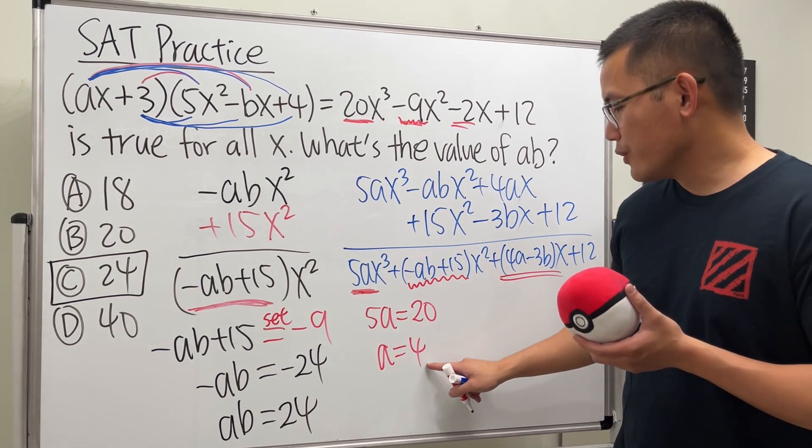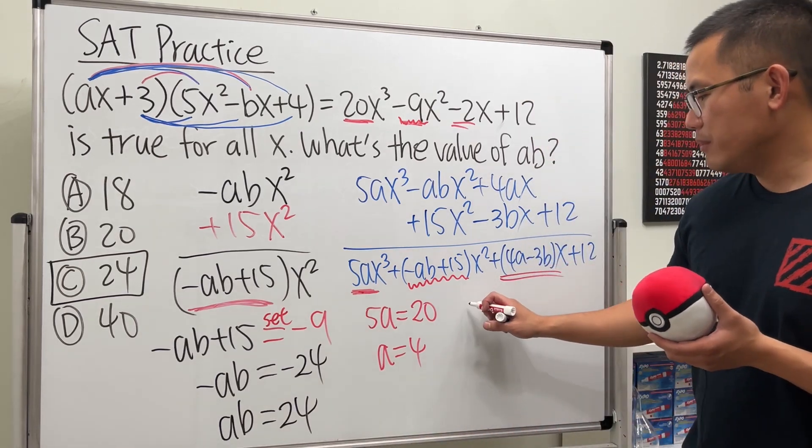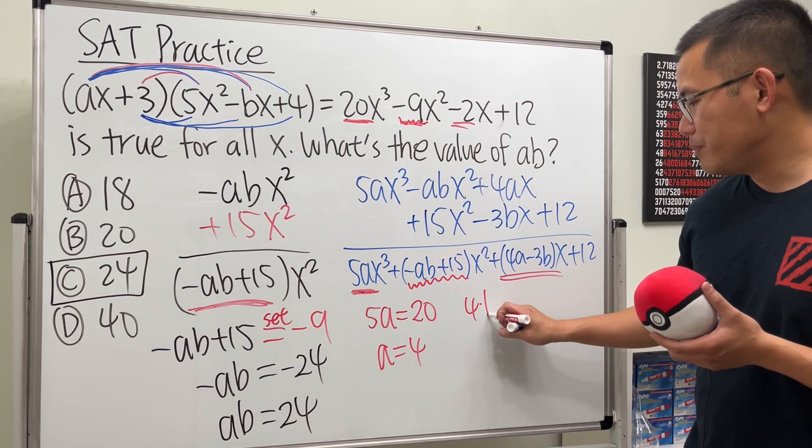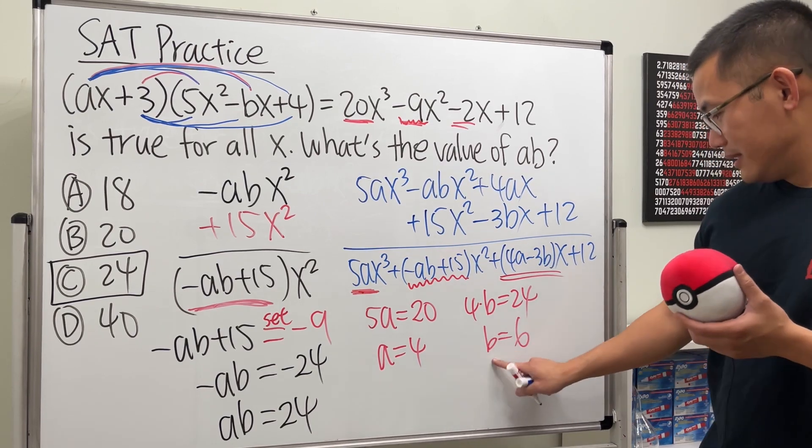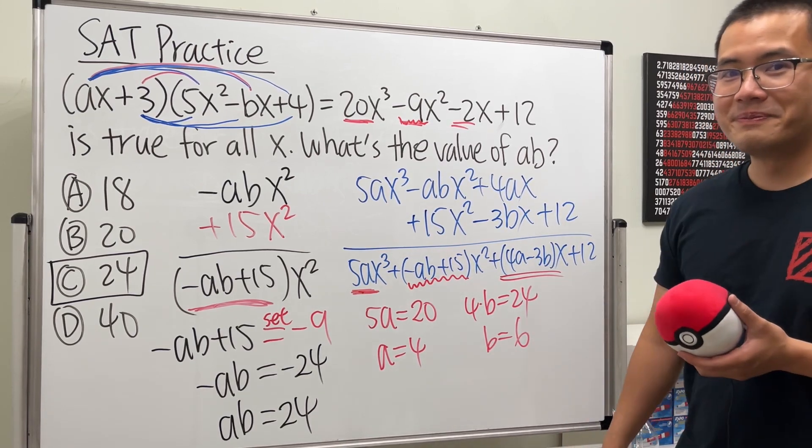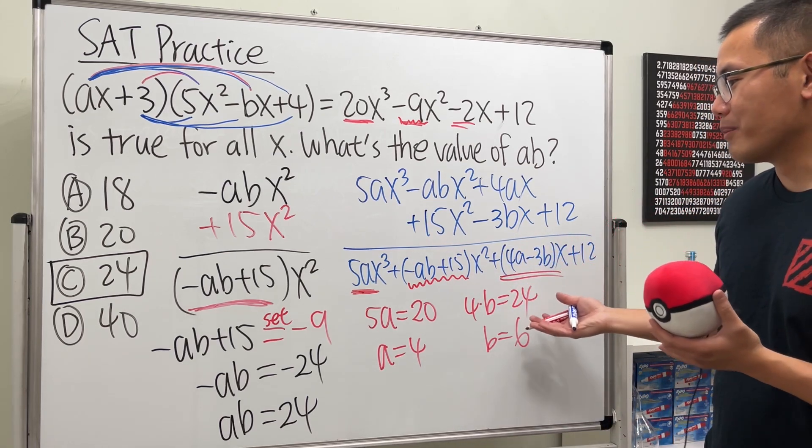When a is equal to 4, you know ab is equal to 24 already. So, that means 4 times b has to be 24. And that means b is equal to 6. This is the b. This is the 6. So, this is how you work out the whole question completely.